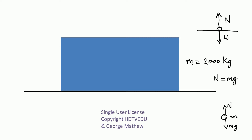Gravitational force is mass times acceleration due to gravity. Mass is 2000 kg and acceleration due to gravity is 9.8 m/s². So we get 2000 times 9.8, which equals 19,600 newtons.